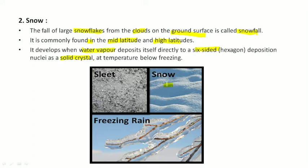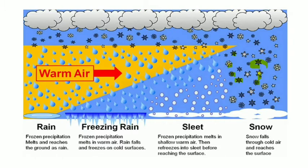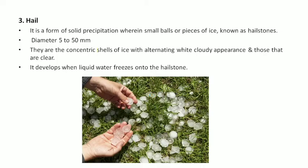You can see here it is snow, it is sleet. Here you get the idea of what is sleet and what is snow. So the next, third point, here you see it is sleet, it is snow. Number three is hail. So what is hail?